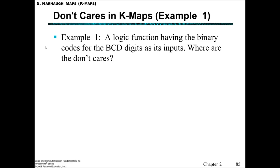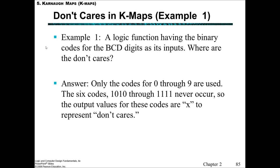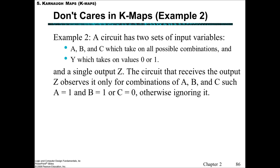Here's an example where we would use don't cares. We've got a logic function having the binary codes for BCD digits as the inputs, and remembering that in BCD we only have codes from 0 to 9. After that we have another BCD digit, so from 10 through to 15 we don't care — it's not going to happen. So those six codes — from 1010 (which is 10) all the way through to 1111 (which is 15) — will never occur, and so the output values we can simply say are X: don't care.